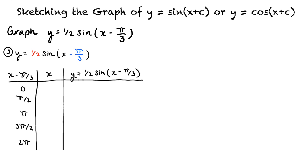To find the x values, we will set x minus pi over 3 equal to 0, pi over 2, pi, 3 pi over 2, and 2 pi, and solve for x. This will result in x equals pi over 3, 5 pi over 6, 4 pi over 3, 11 pi over 6, and 7 pi over 3.